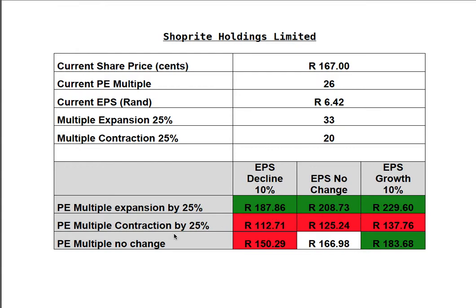If the EPS declines by 10% it would be about 187 Rand per share. If the multiple were to contract, with an EPS decline of 10% the share would drop significantly to about 113 Rand per share; with no change in EPS it would be about 125 Rand; and with EPS growth of 10% it would be about 137 Rand per share. The green color represents all positions where being long in the share would make money, and the red represents all positions where a long would lose money.